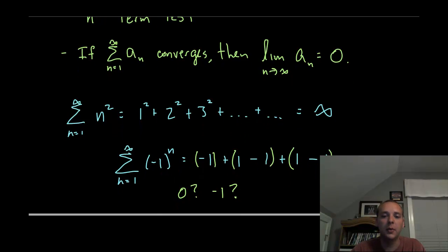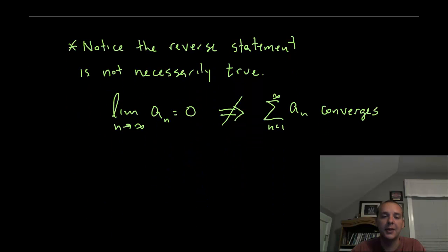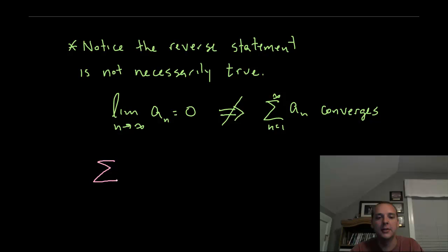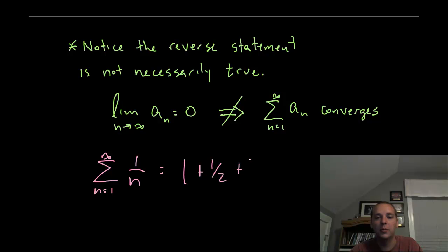One thing to be very clear about before trying more examples: the reverse statement is not necessarily true — this is usually where students get in trouble. If you find a series whose terms do, in fact, go to zero, that does not automatically mean the series converges. It's a minimal requirement. For example, the sum from n equals one to infinity of one over n — clearly those terms are getting smaller: one over one plus one half plus one third plus one fourth plus one fifth. Clearly the limit of the terms goes to zero, but it turns out this diverges. So having the terms go to zero does not imply that the series converges.